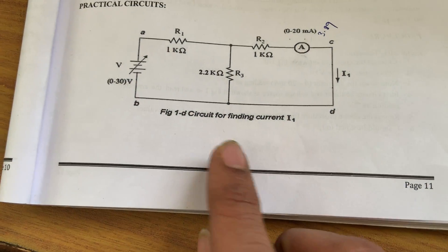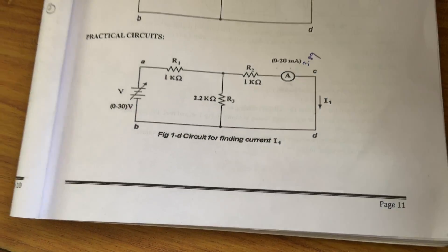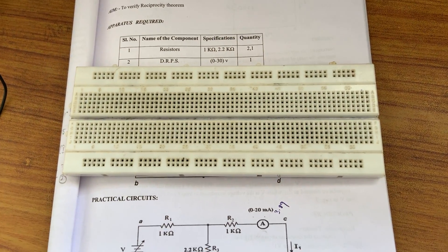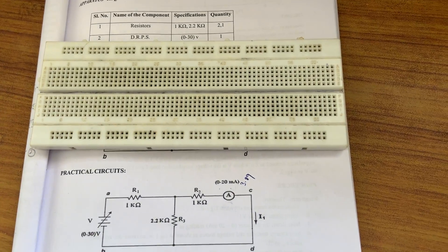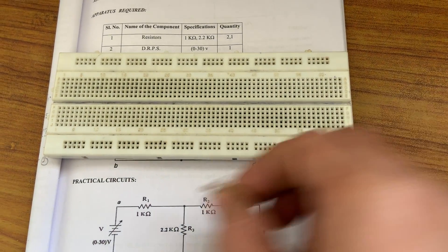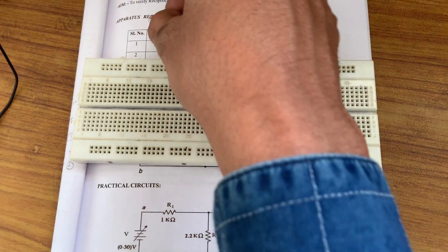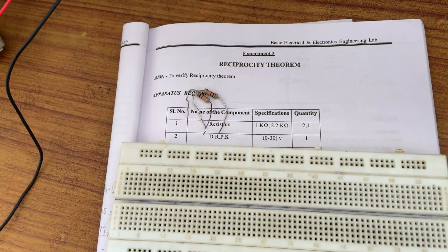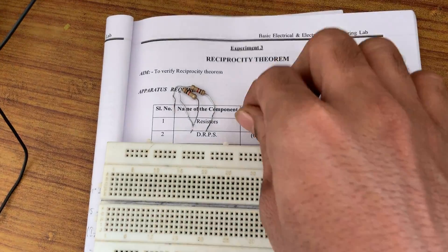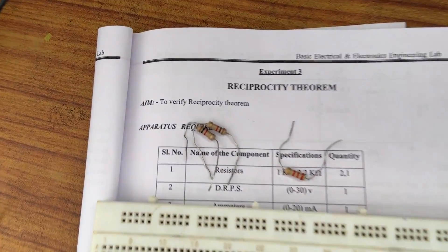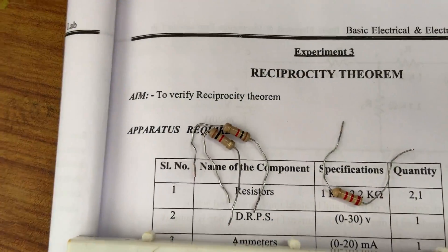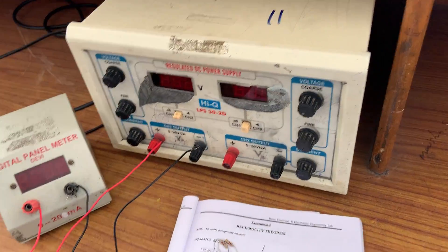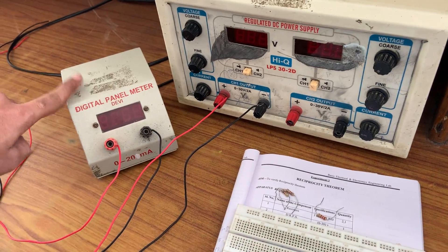For the reciprocity theorem demonstration, I am taking a breadboard, two 1 kilohm resistances, one 2.2 kilohm resistance, an RPS, and an ammeter.